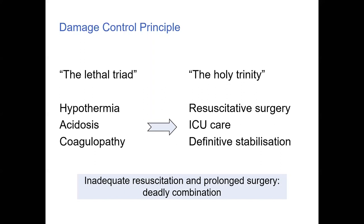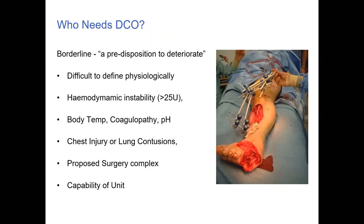Combining inadequate resuscitation with prolonged surgery is a death sentence for most patients — avoid that at all cost. It's really difficult to identify with a set of criteria who needs damage control orthopedics beyond the polytrauma patient that's obviously shocked. But you get the borderline patient who has a predisposition to deteriorate, and those are the ones you must identify. It's very difficult to define purely with figures — it requires a clinical assessment.